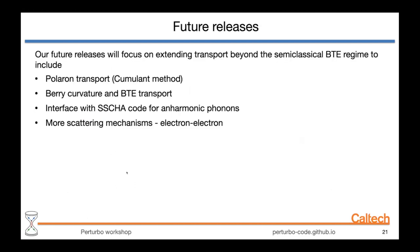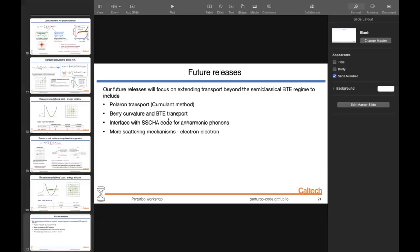For future releases, we plan to extend transport beyond the semi-classical Boltzmann equation by including polaron transport using a cumulant ansatz, combining Berry curvature with the Boltzmann equation, interfacing with the stochastic self-consistent harmonic approximation SSCHA code for anharmonic phonons, and including more scattering mechanisms — particularly electron-electron scattering. With that, I would like to conclude my talk, and I'd be happy to take any questions.